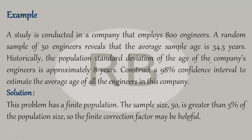Historically, the population standard deviation of the age of the company's engineers is approximately 8 years. We need to construct a 98% confidence interval to estimate the average age of all the engineers in this company — all 800 of them. Here, the population size is given as 800 and sample size is 50, so you can see that 50 is more than 5% of 800.